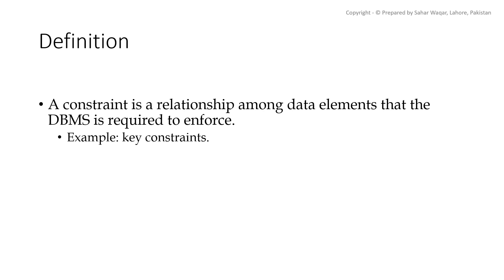A constraint by definition is a relationship among data elements that the DBMS is required to enforce. For example, a tuple must have a unique attribute that will distinguish it among all tuples of a relation, i.e. key constraints or primary key constraints.